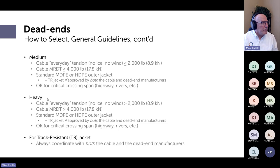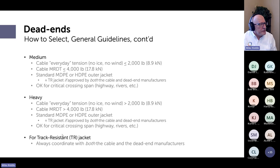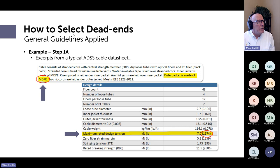Heavy duty dead ends: cable everyday tension greater than 2,000 pounds (no ice or wind), MRDT above 4,000 pounds, MDPE or HDPE jacket, tracking resistant okay if approved by both manufacturers, and also acceptable for critical crossing spans. A heavy duty dead end is generally a special design — you're in unusual territory at these conditions.